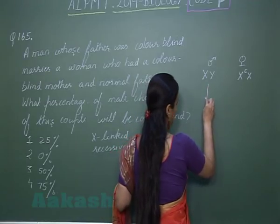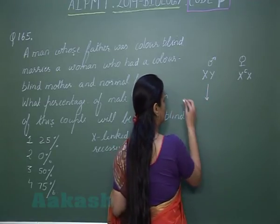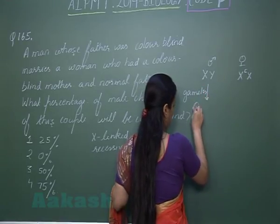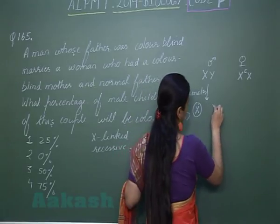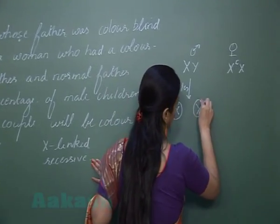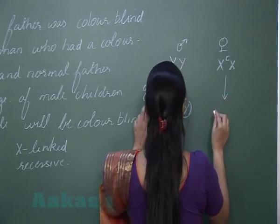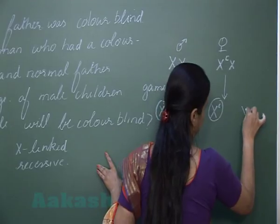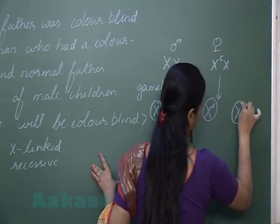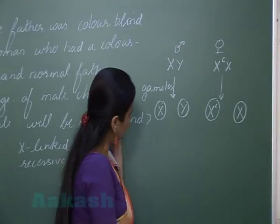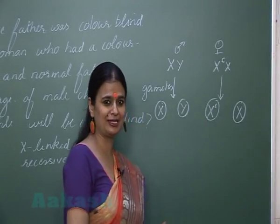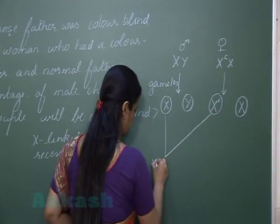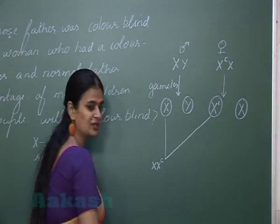In the male, two types of gametes are formed — 50% carry the X chromosome and 50% carry the Y chromosome. Similarly, in the female, two types of gametes are formed: one carrying the diseased allele and one carrying the normal allele. These gametes will undergo random fertilization.